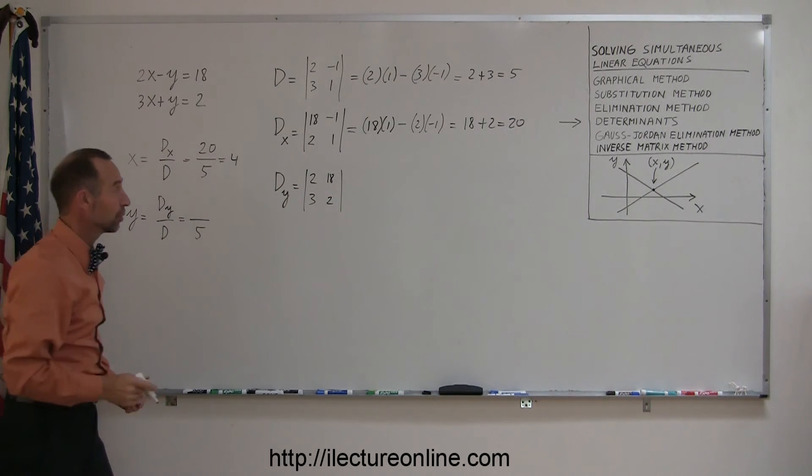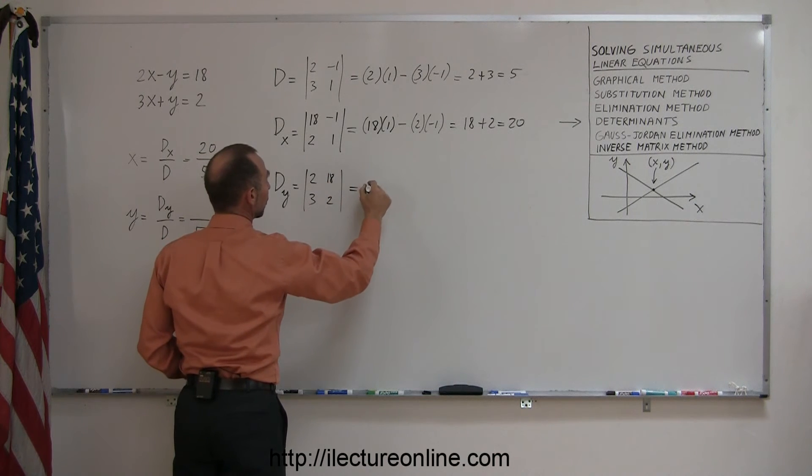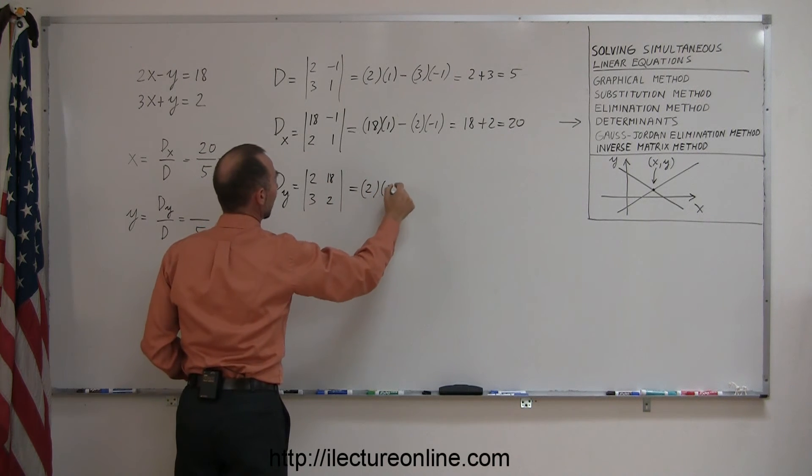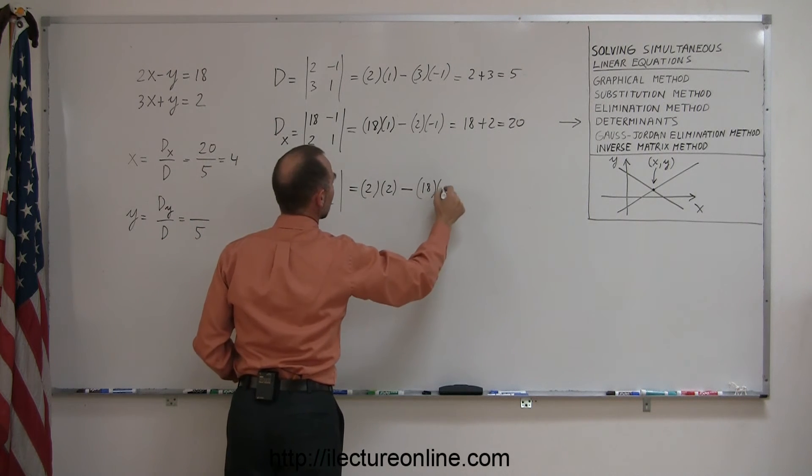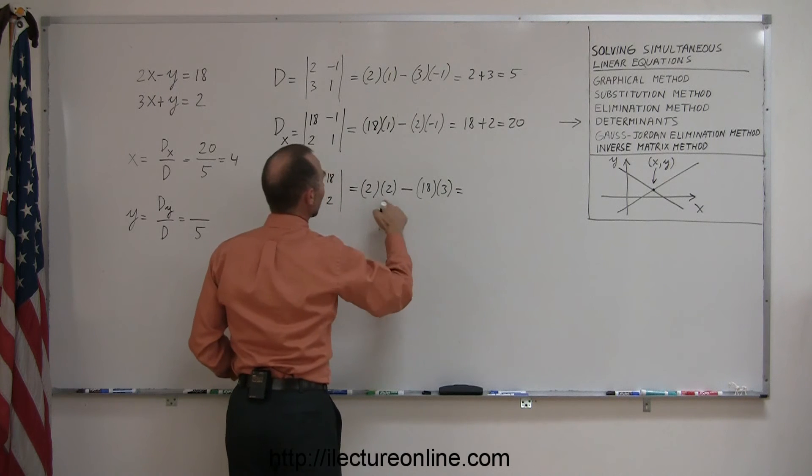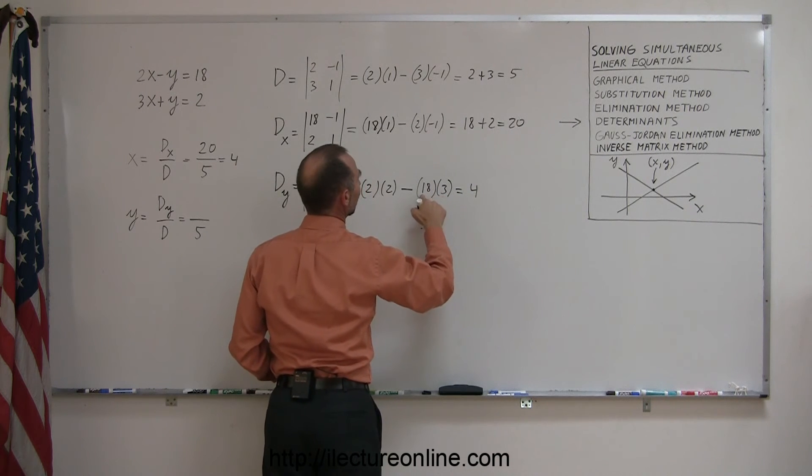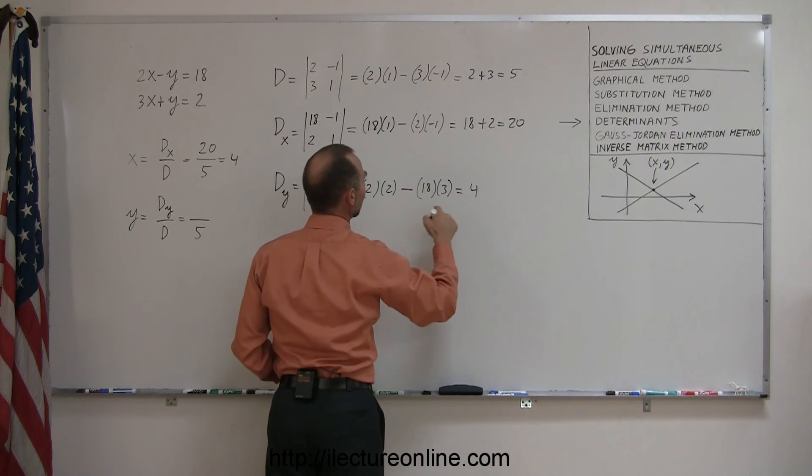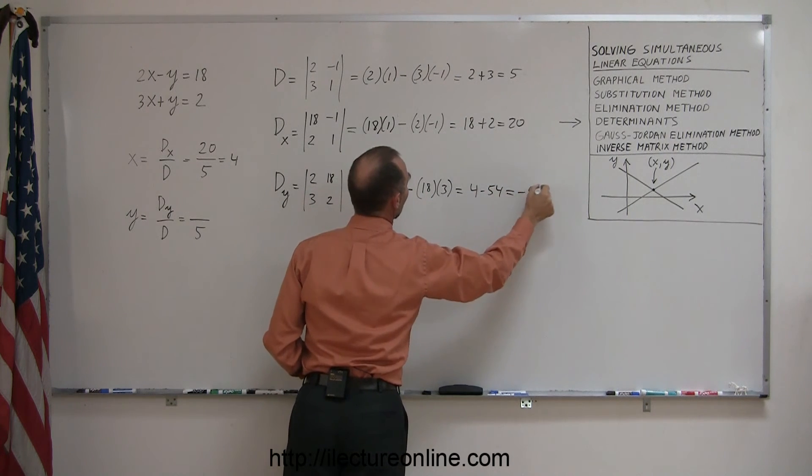And then again, to solve the determinant like this, we multiply the two numbers like this in the determinant in the diagonal, 2 times 2, and subtract from that the product of these two, which is 18 times 3. So 2 times 2 is 4, 18 times 3, well 3 times 10 is 30, plus 24 is 54, so minus 54, and so 4 minus 54 is minus 50.